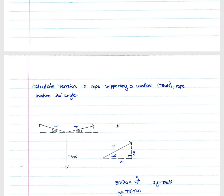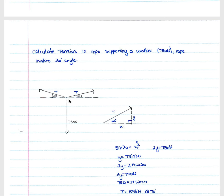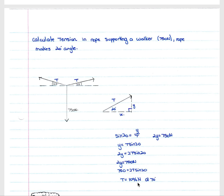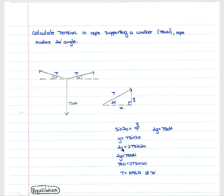For example: calculate the tension in a rope supporting a walker of 750 newtons where the rope makes an angle of 20 degrees. We know 750 newtons acts downward. We calculate each Y component of the two tensions, solving for Y including T for tension. Since the two tensions are equal, you solve simultaneously and find the tension is 1096 newtons for each rope.